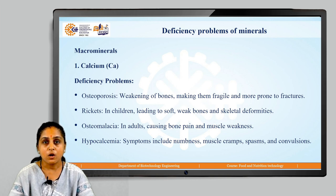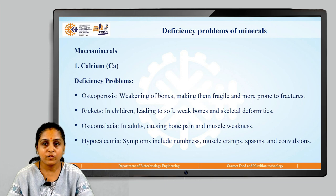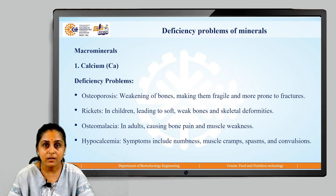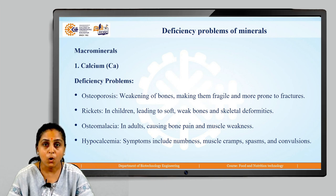Osteoporosis leads to weakening of bones, making them fragile and more prone to fractures. Rickets is usually seen in children, which leads to softening and weakening of bones, also with skeletal deformities.